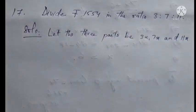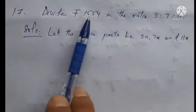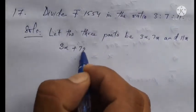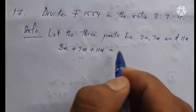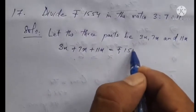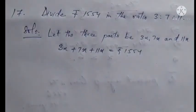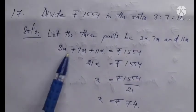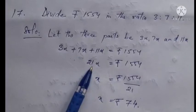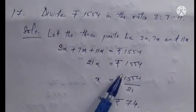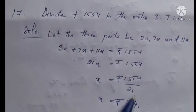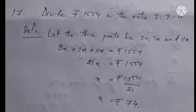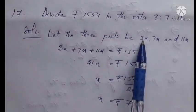Since the total is 1,554, we have 3x plus 7x plus 11x equals 1,554. Adding these together, 3 plus 7 plus 11 equals 21, so 21x equals 1,554. Therefore x equals 1,554 divided by 21, which equals 74.